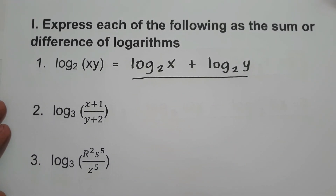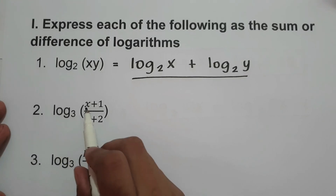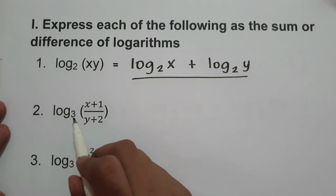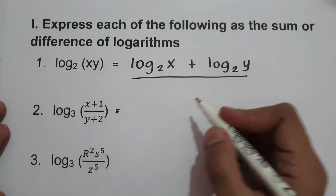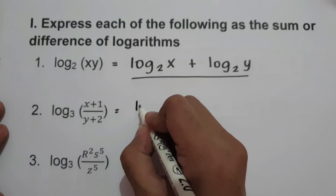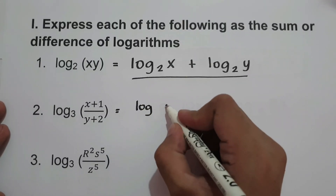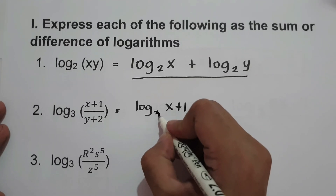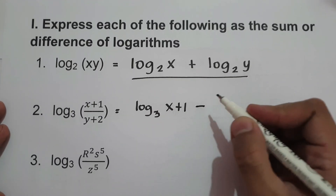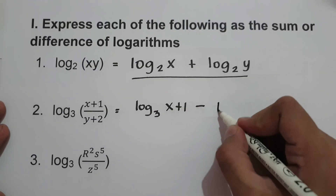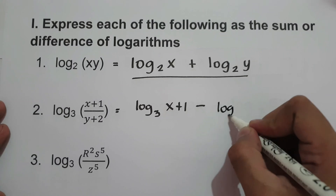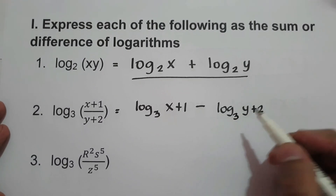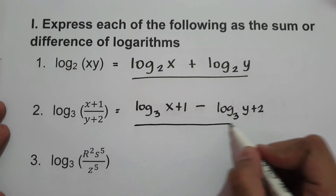What about number two? Log base 3 of (x+1)/(y+2). We're going to have log base 3 of (x+1) minus, because this is a quotient, log base 3 of (y+2). So this will be our final answer.